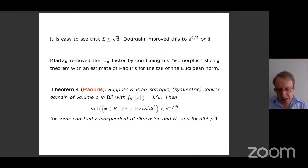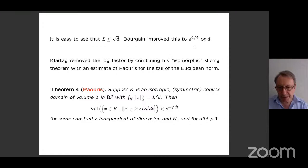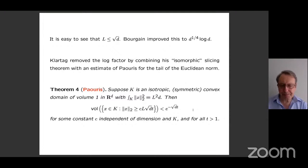Paouris's estimate says that for an isotropic domain, the probability that the Euclidean norm of a point exceeds L times the square root of D by a multiple T decays like e to the minus root D times T. This decay is exponential with the optimal constant root D in the exponent. The point is that this square root of D gives rise to the D to one quarter bound. This tail estimate is in the same spirit as the thin shell estimate, though the two are independent of each other.